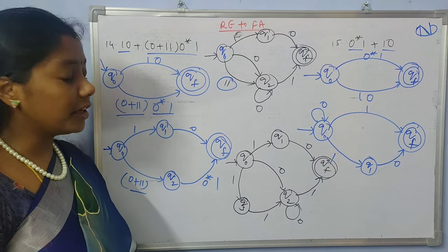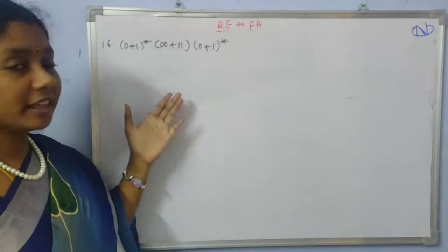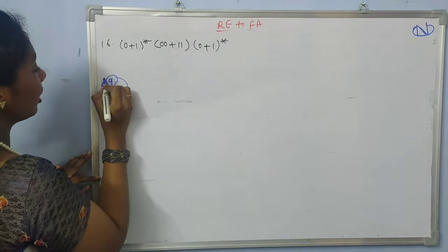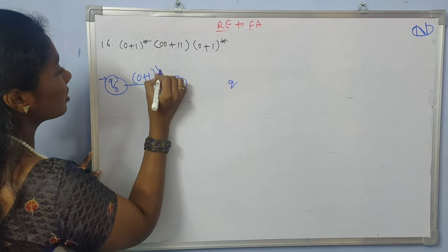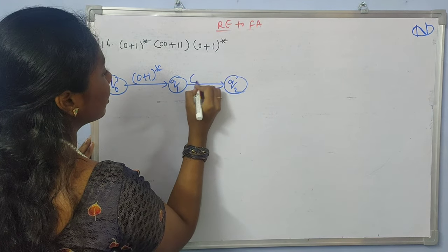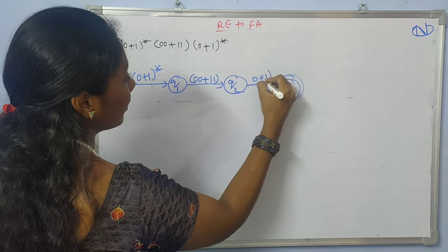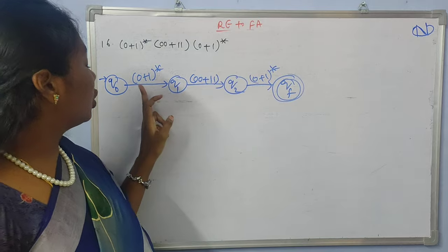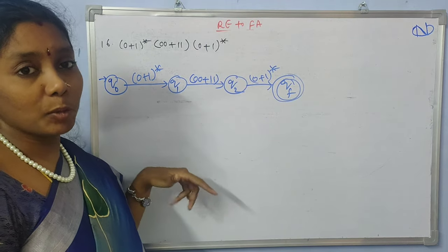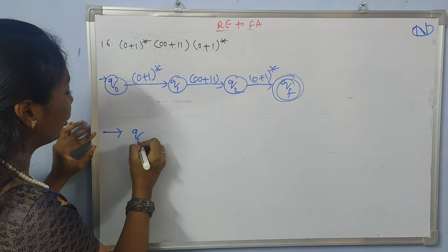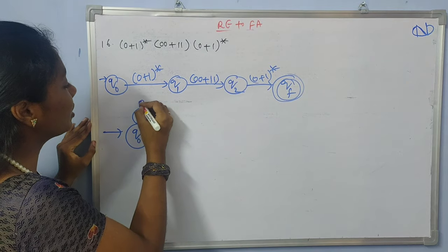Let us consider another example. Here we can divide the regular expression into three parts — it looks like a, b, c. I need one initial state, then here I write a which is (0+1)*, then b which is 00+11, and then c which is (0+1)*, and this leads to the final state. Since a and c are both closures, they can be represented as self loops. So for q0 I can have a self loop with 0,1 — meaning I can go either with 0 or with 1.